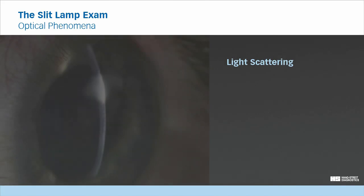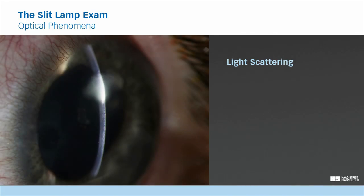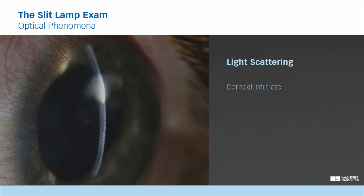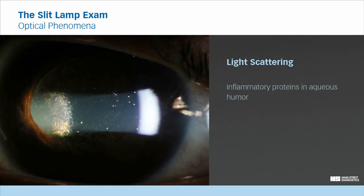During the slit lamp examination, this phenomenon is frequently observed. For example, in this case of corneal infiltrate, the light is scattered and provides information about the dimension of the lesion. Or in this case of ocular inflammation, the light is scattered by the inflammatory proteins in the aqueous humor.